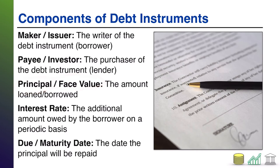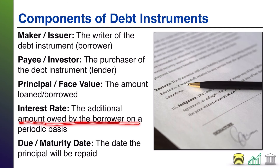You'll have what's known as the principal or the base value. This is the amount that is loaned or borrowed, depending on which side of the transaction you're looking at this from. In the case of a note, it's typically referred to as the principal. In the case of a debt investment — a bond — it's typically referred to as the face value of the bond. You'll also have the interest rate, which is going to establish the additional amount owed by the borrower on a periodic basis. You have the principal amount — this is what I'm borrowing — however, as part of borrowing that money, every month or quarter or year, there is going to be an associated interest accrual that the borrower will have to pay the lender, and the lender is going to record some receivables for that interest.